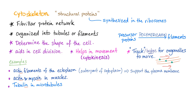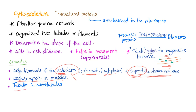Examples of the cytoskeleton: we have actin filaments of the ectoplasm. What is the ectoplasm? You know cytoplasm? 'Ecto' means outer, so this is the outer part of your cytoplasm. It provides structural support for the plasma membrane. Actin and myosin in muscles. Tubulin in microtubules. Notice that all of them end in '-in' — actin, myosin, tubulin — because they are proteins. So anything that ends in '-in' in medicine is probably a protein.